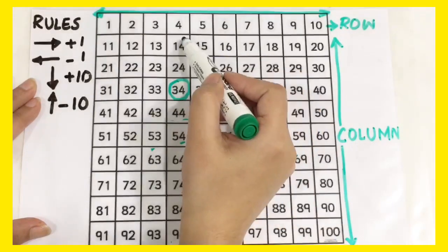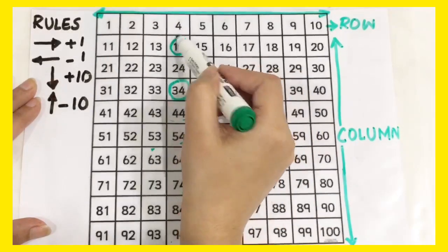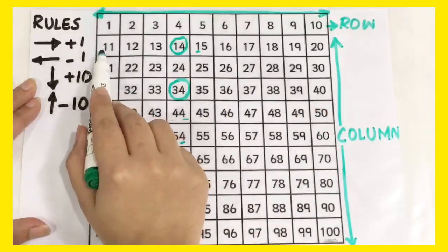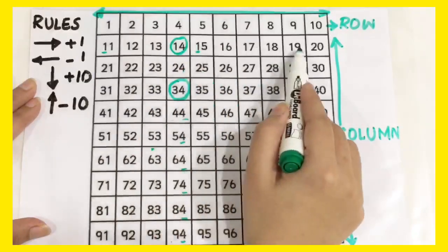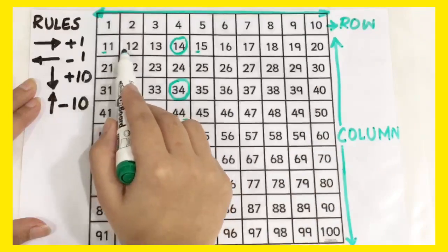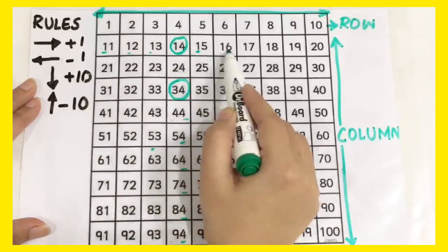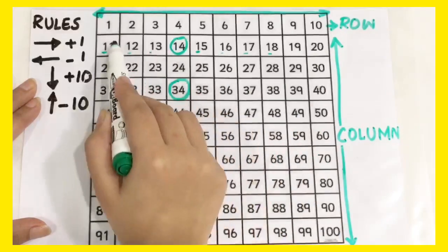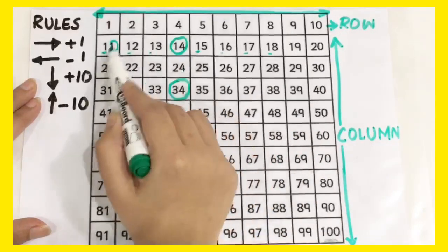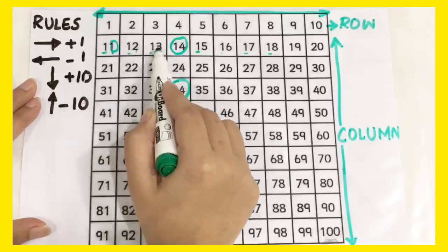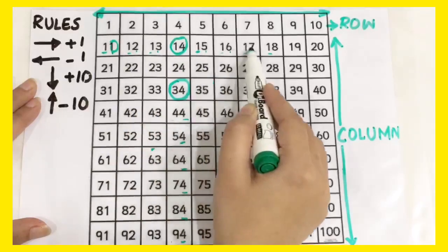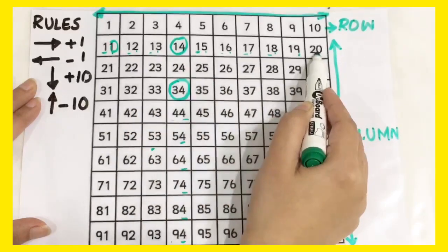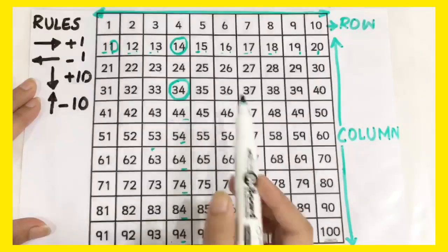Whereas in a row, the number on the tenth place remains the same. As you can see, this row is of teen numbers. The numbers are the same, 1 is the same in each number. Whereas the numbers at the unit place are increasing: 1, 2, 3, 4, 5, 6, 7, 8, 9 and this is 20 now.